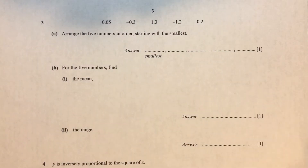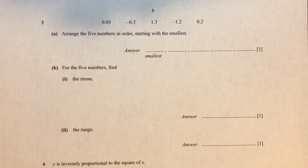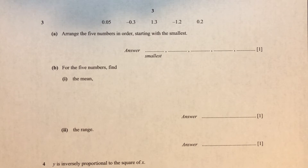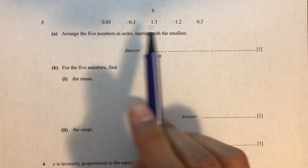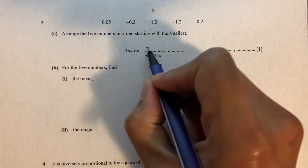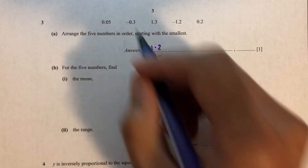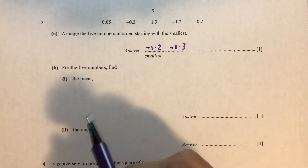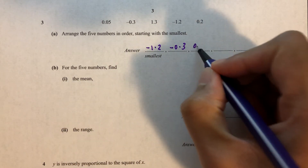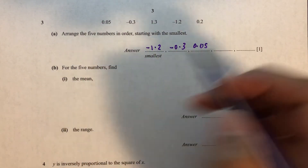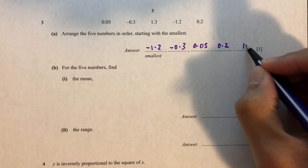Question number 3. We have 0.05, minus 0.3, 1.3, minus 1.2, and 0.2. Arrange the five numbers in order starting with the smallest. Negatives are smaller, so we choose the most negative first: minus 1.2 is the smallest, then minus 0.3, then 0.05, 0.2, and 1.3.